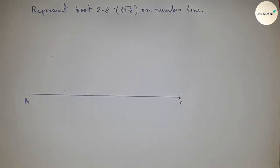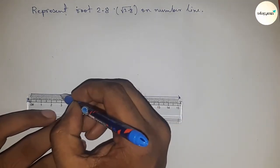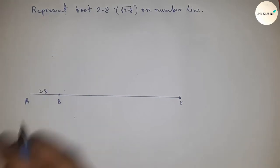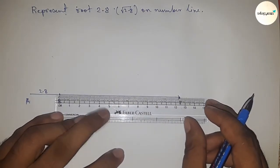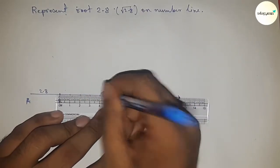Next, take a distance of 2.8 centimeters. This is point B, and AB equals 2.8 centimeters. Next, we need to mark all the numbers on the line from B to X.